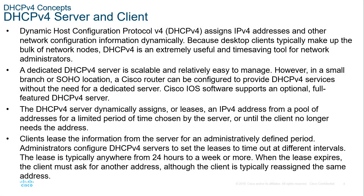The first section covers DHCP concepts. DHCP stands for Dynamic Host Configuration Protocol. We're dealing with version 4, which is about assigning IPv4 addresses and other configurations such as subnet mask, default gateway, and DNS settings. A dedicated DHCP server on a router makes it more scalable and easier to manage. Smaller locations might use a Cisco router to provide the same services instead of a dedicated server.